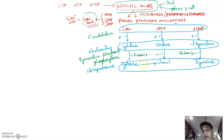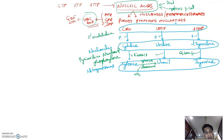Now cytosine cannot undergo catabolism further, so cytosine gets converted by cytosine deaminase, wherein the amino group is removed, converting it to uracil.